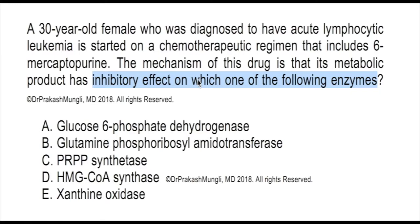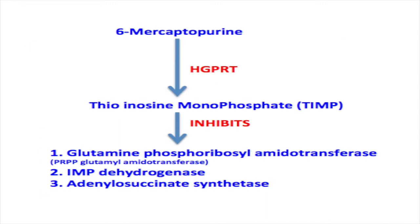Now, what does thioinosine monophosphate (TIMP) do? TIMP is going to inhibit one of the key purine synthesis regulatory enzymes, that is glutamine phosphoribosyl amidotransferase. Glutamine phosphoribosyl amidotransferase is the key regulatory enzyme in de novo purine biosynthesis, and this enzyme is inhibited by TIMP, which is the metabolic product of 6-mercaptopurine.